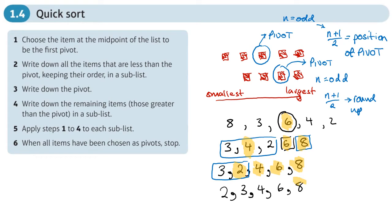We highlight all previously chosen pivots, and the last one is 3 — it's its own pivot. Once all items have been chosen as pivots, we stop; the list is now ordered. To summarize: choose your pivot in the middle; keep numbers already on the correct side; nudge values on the wrong side across next to the pivot, maintaining their order.